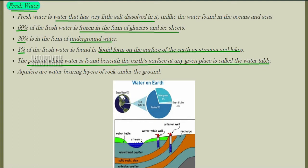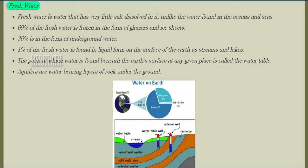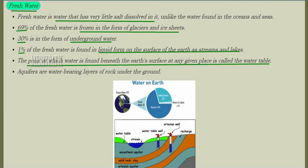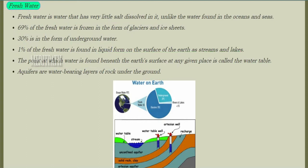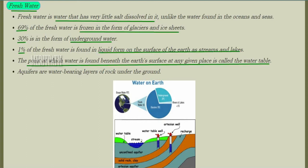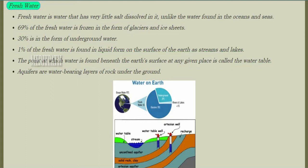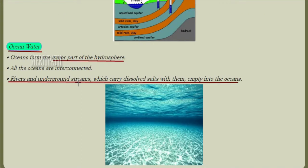The point at which water is found beneath the earth's surface at any given place is known as the water table. Aquifers are nothing but water-bearing layers of rocks under the ground.